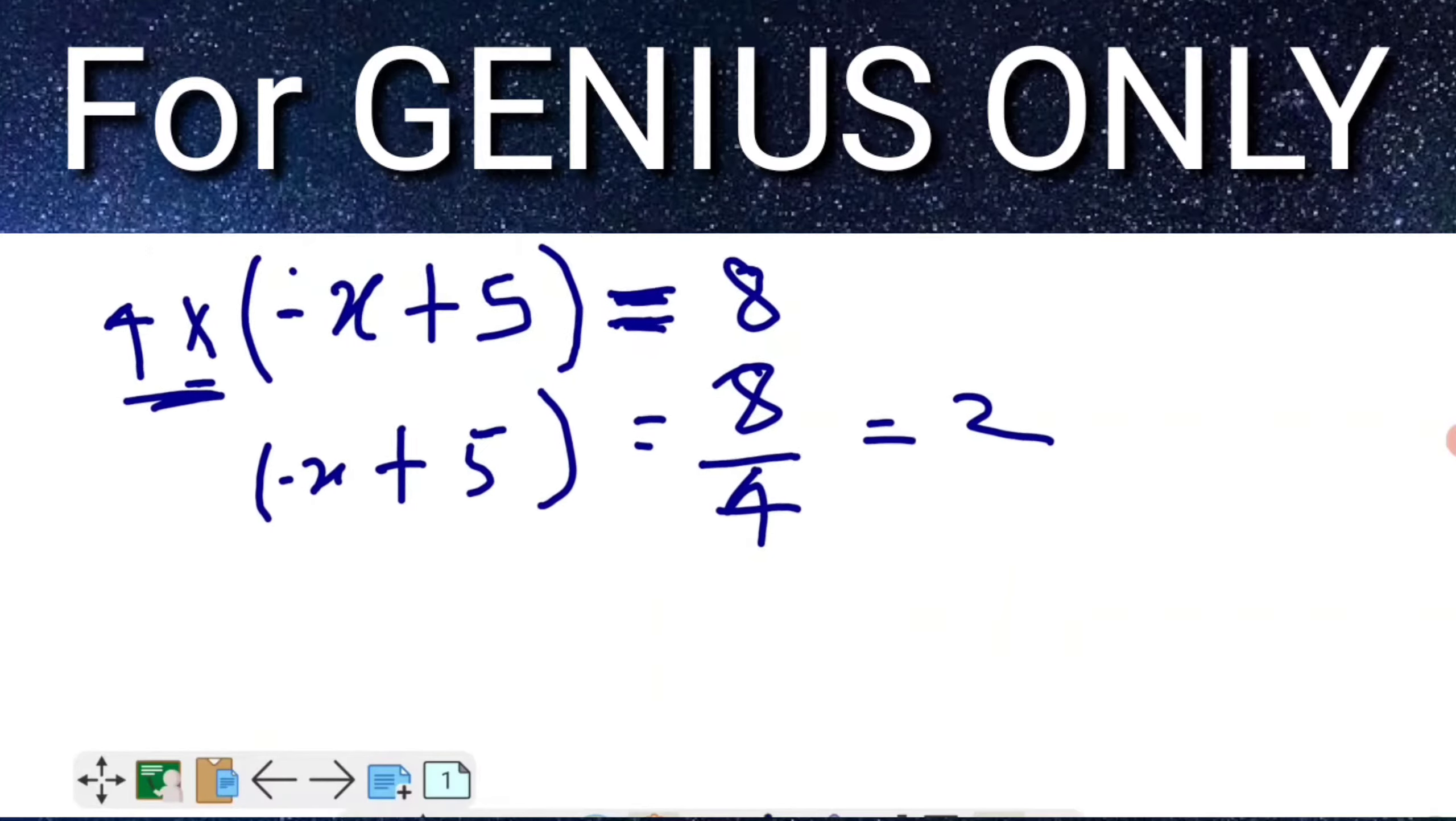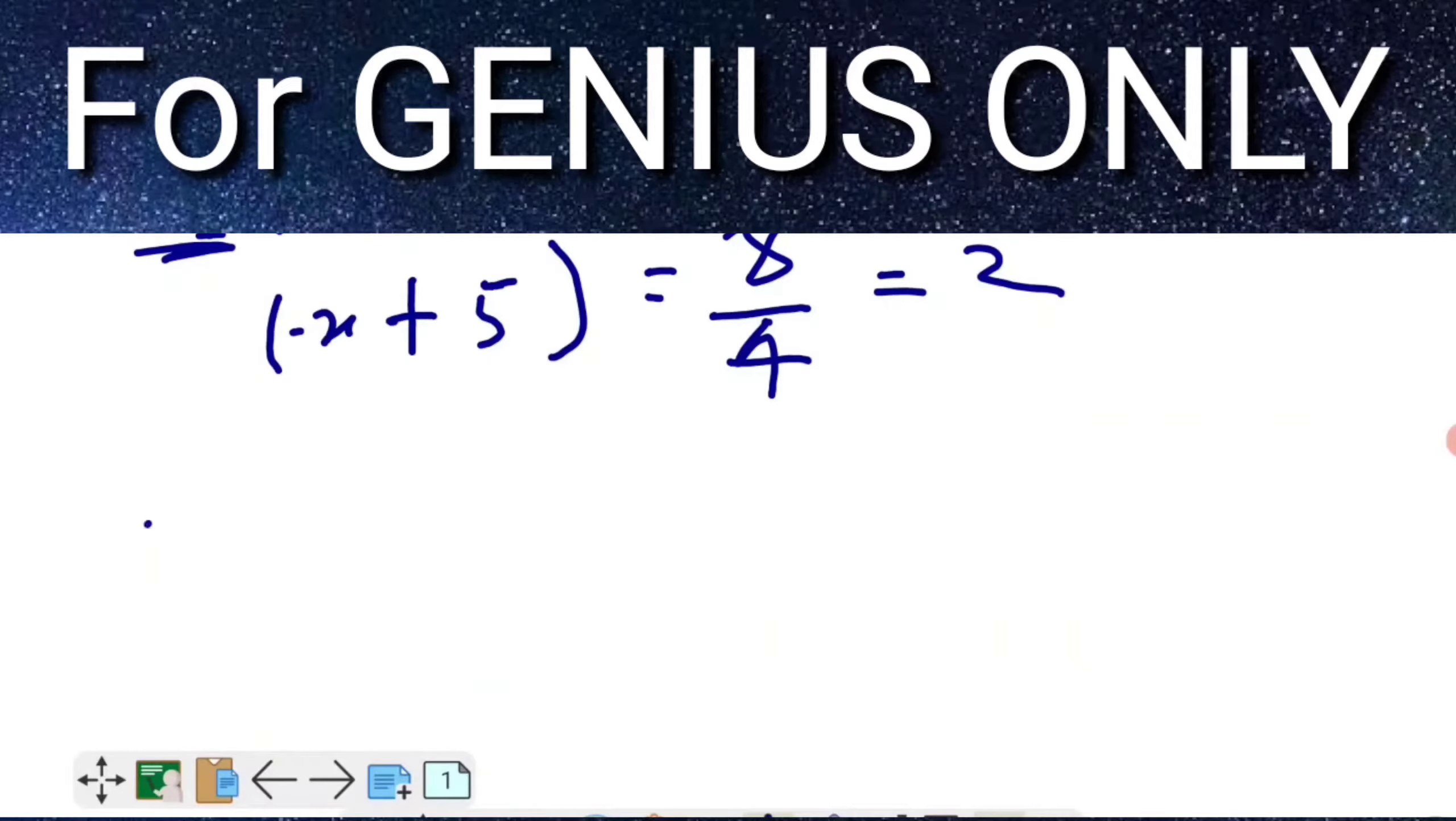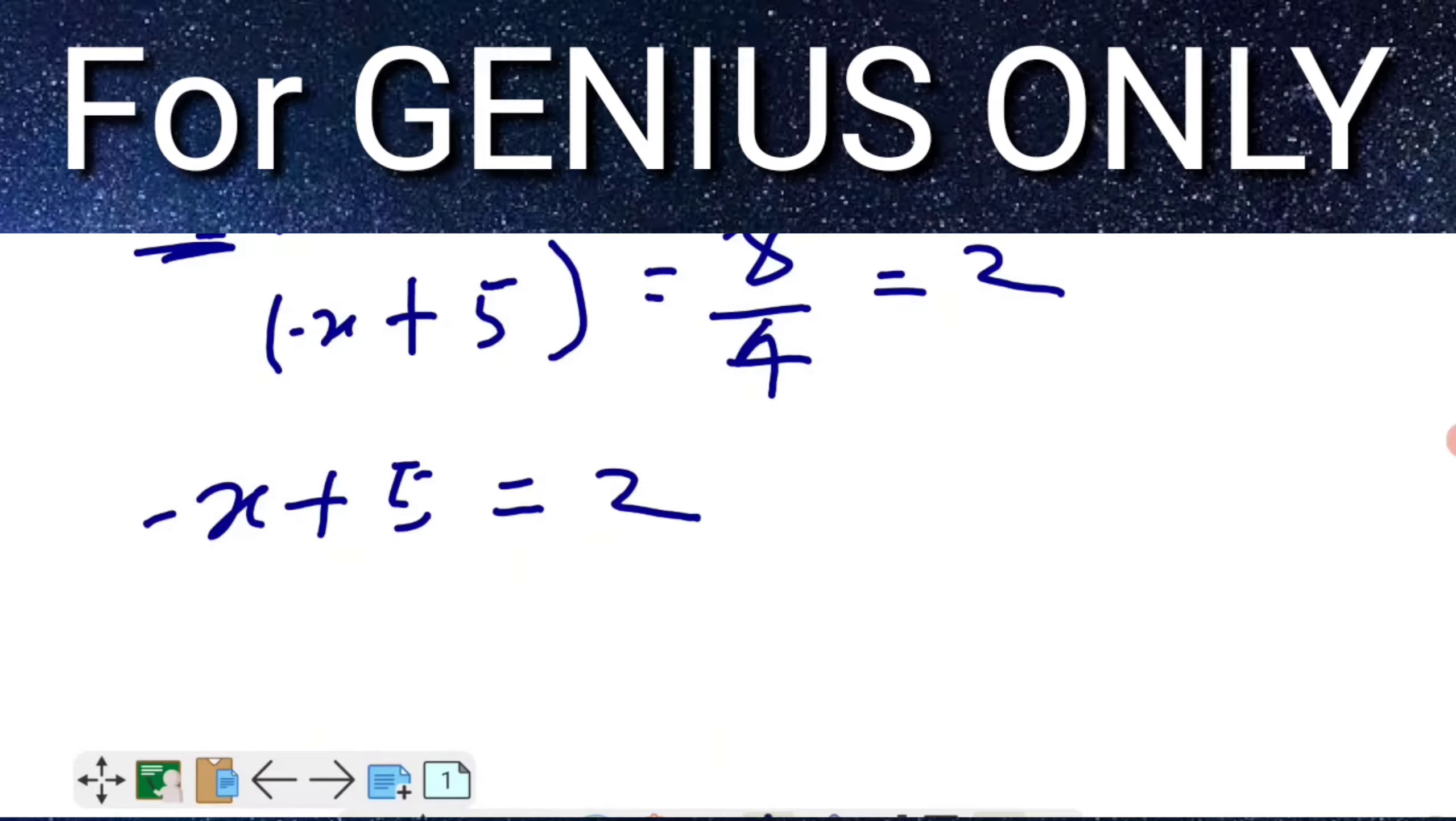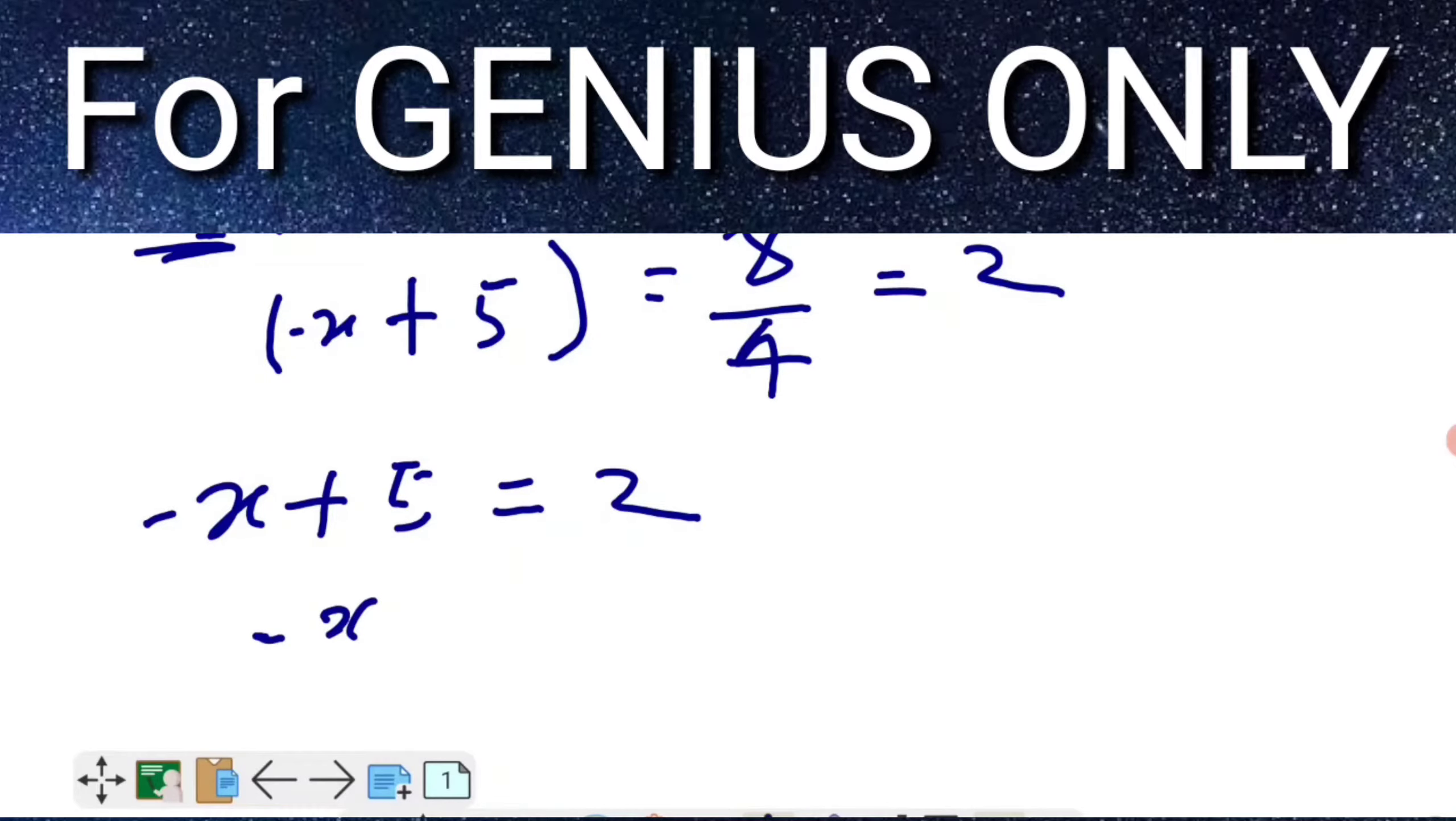Now friends, when I remove the bracket, it will look like -x + 5 = 2.